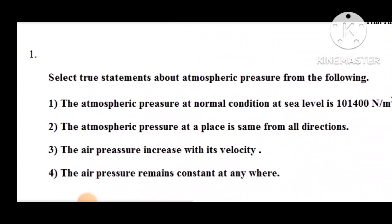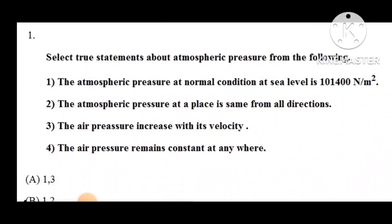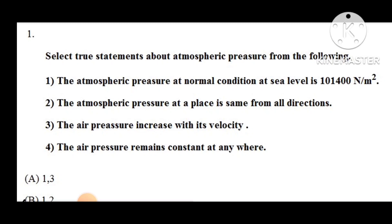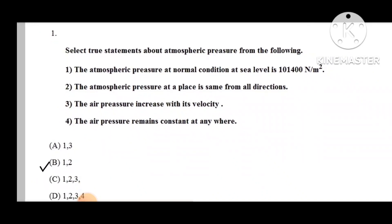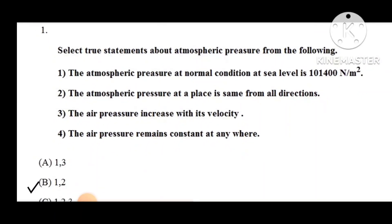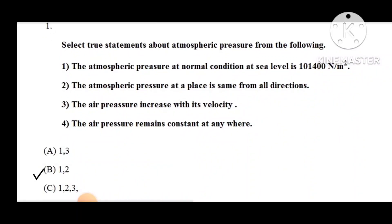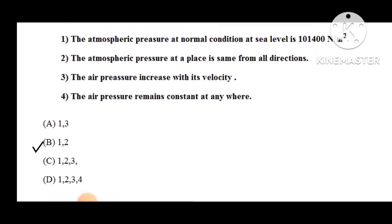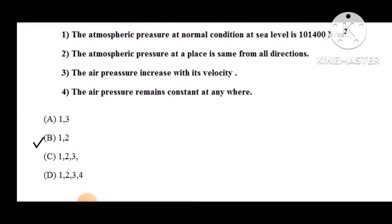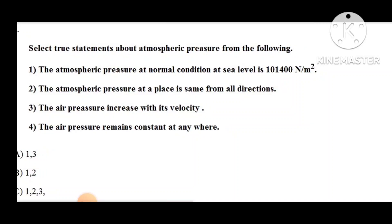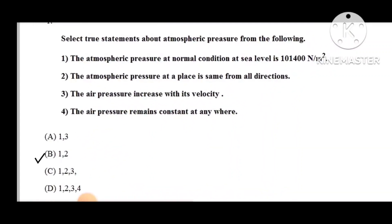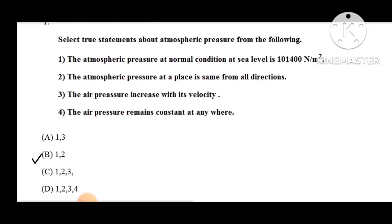Question number 1: Select two statements about atmospheric pressure from the following. First statement: the atmospheric pressure at normal condition at sea level is 10,14,000 Newton per meter square. Second statement: the atmospheric pressure at a place is the same from all directions. Third: air pressure increases with its velocity. Fourth: air pressure remains constant anywhere. The correct option is number 2 — the atmospheric pressure at a place is the same from all directions.